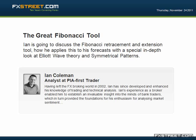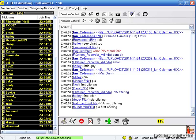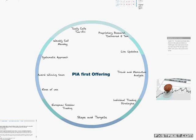We analyze and offer analysis on 11 FX pairs as well as indices and interest rate futures. All reports are supplied with stops, targets, and reasons for the analysis. PIA First is a new offering which is aimed at the retail investor as opposed to institutions.